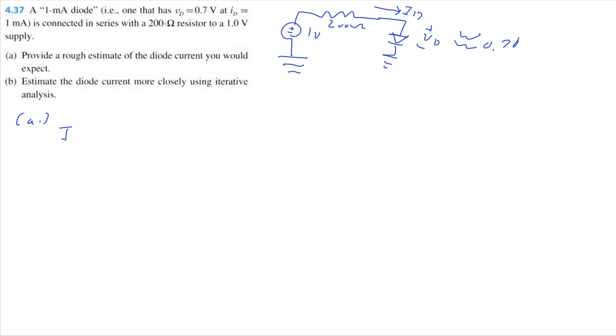So, just using KVL, we can estimate the diode current to be 1 volt minus 0.7 volts divided by 200 ohms. And that is equal to 1.5 milliamps. But this is just an estimate, right? We don't actually know if this is correct.